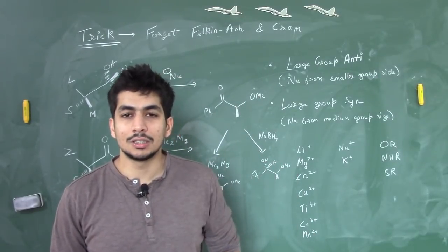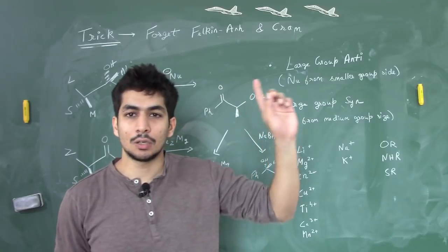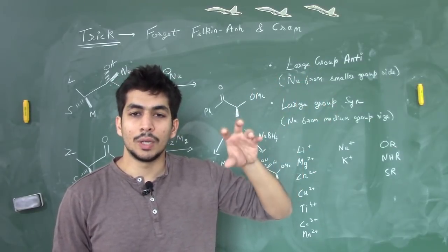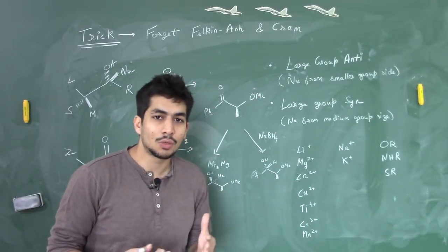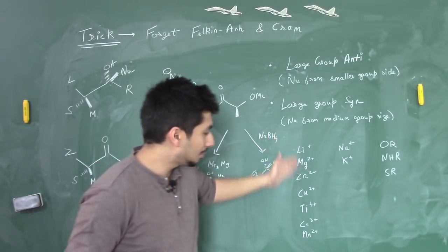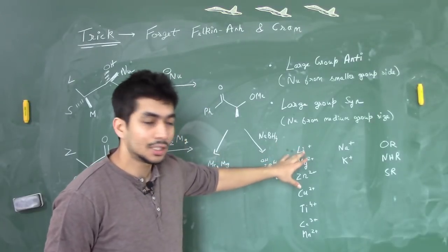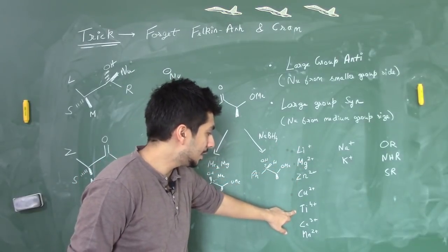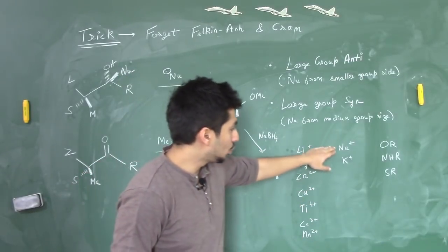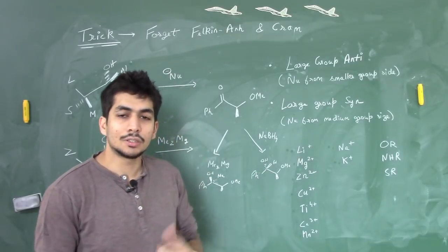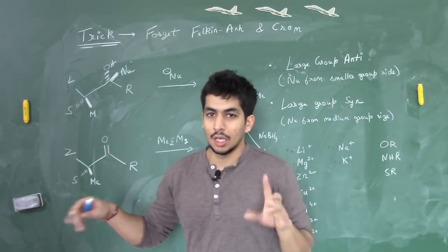Now, there is something confusing — chelation. Chelation happens with certain metals. This table from Clayden shows metals that like to chelate: lithium, magnesium, zinc, copper, titanium, cerium, and manganese are important chelating agents, whereas sodium and potassium do not show chelation. In the case of chelation, you don't consider the large group — instead, you consider the Z group.